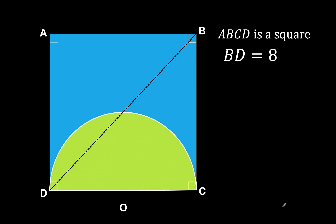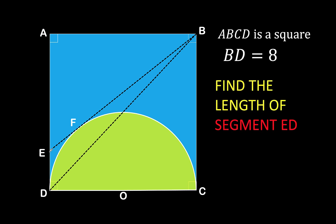We draw a semicircle where each side coincides with side DC of our blue square. Then we draw a line segment BE that is tangent to the semicircle at point F. We would like to find the length of segment ED, and let's call it X.